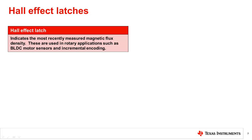A Hall effect latch indicates the most recently measured magnetic flux density. Alternating north and south poles are required to toggle latch devices. These are used in rotary applications such as BLDC motor sensors and incremental encoding.